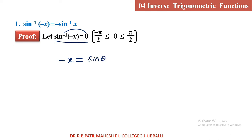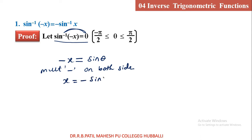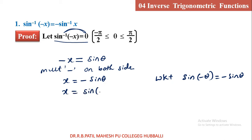If sin inverse goes to the right side, it becomes sin theta. Multiply minus on both sides, so x is equal to minus sin theta. We know that in trigonometry, sin of minus theta is equal to minus sin theta. So in the RHS part, I will write minus sin theta as sin of minus theta using the trigonometric result.